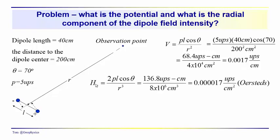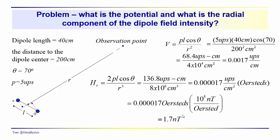To calculate the radial field intensity, we use H equals 2PL cosine theta over R cubed, giving 136.8 ups·centimeters over 8 times 10 to the 6th centimeters cubed, which equals 0.0017 ups per centimeter squared — the unit known as the Oersted. Since there are 10 to the 5th nanoteslas per Oersted, and we typically measure data in nanoteslas or gammas, this converts to 1.7 nanoteslas.